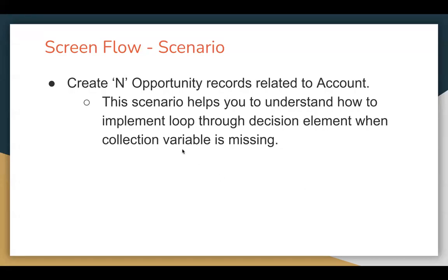Let's understand one more screen flow scenario. In this scenario, we need to create N opportunity records related to an account, and the value of N will be provided by the end user. This scenario helps you understand how to implement a loop through a decision element when a collection variable is missing.